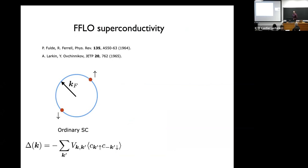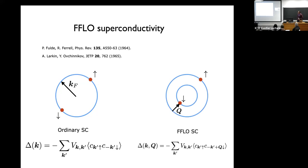Let me start by reviewing some familiar notions. What I'm going to be discussing in my talk is a rare and exotic type of superconductivity related to something studied long ago, known as FFLO superconductivity. In a metal with inversion symmetry or time reversal symmetry, pairing in the clean limit involves antipodal points on the Fermi surface between k and minus k.